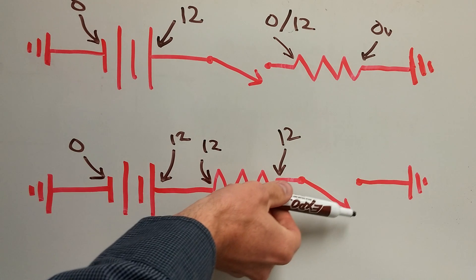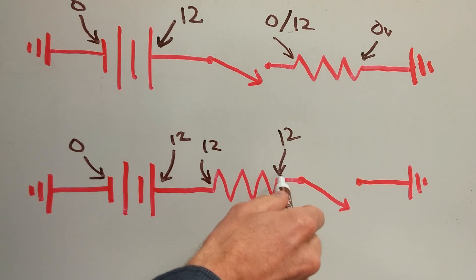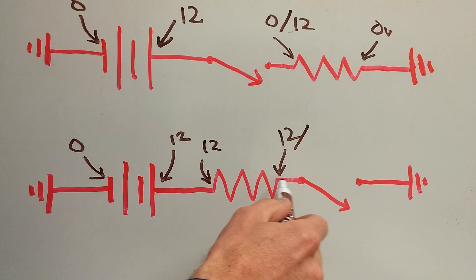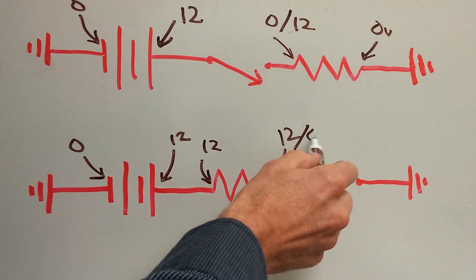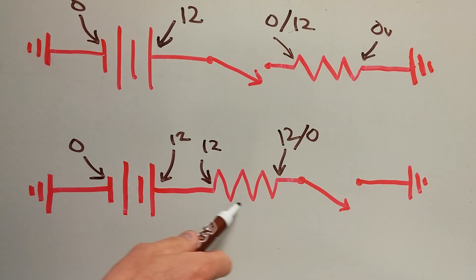Now, as soon as this switch closes, this changes. This now is connected to ground, which is 0 volts. And all of the voltage should be dropped across that resistor.